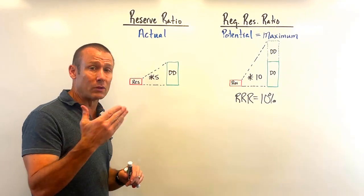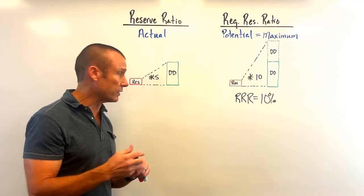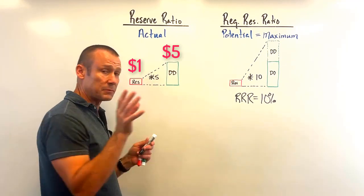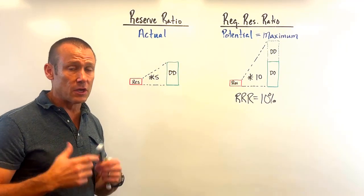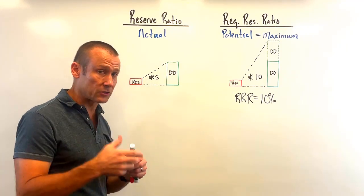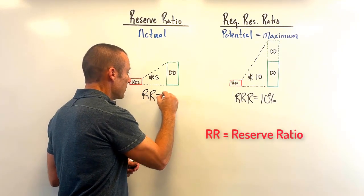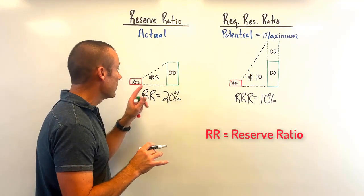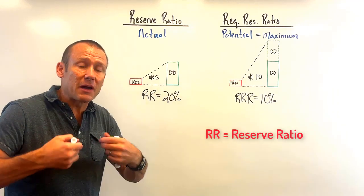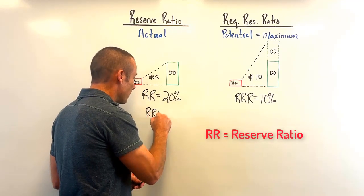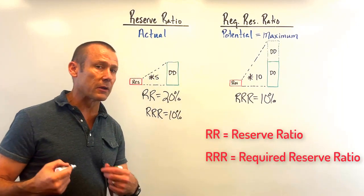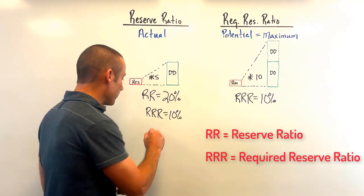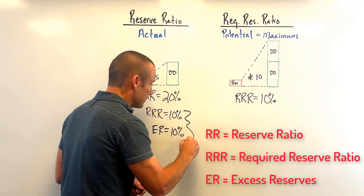What's actually happening in banks is that banks are choosing to hold one dollar in reserve for every five dollars in demand deposits. That means their reserve ratio is 20% — they're holding 20% of their demand deposits as reserves. We might then find out in the problem that the required reserve ratio is 10%, and the problem may ask how many excess reserves banks are choosing to hold.